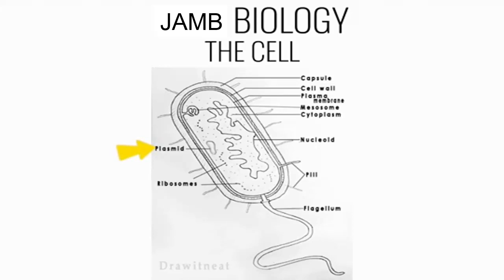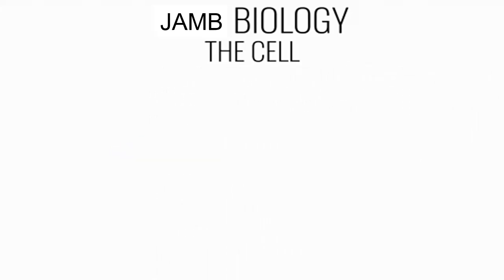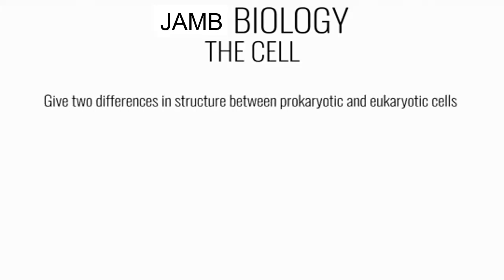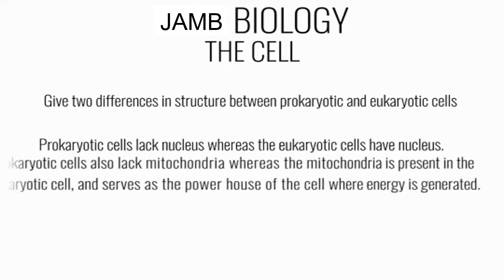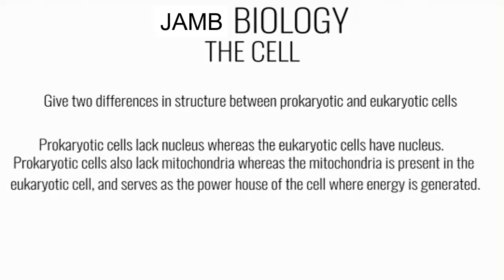Here's a revision question: give two differences in structure between prokaryotic and eukaryotic cells. Feel free to pause and try it yourself. The first difference is that prokaryotic organisms lack a true nucleus, whereas eukaryotic organisms have a nucleus that is membrane-bound. Second, prokaryotic organisms lack mitochondria, whereas eukaryotic organisms have mitochondria, which serve as the powerhouse of the cell.